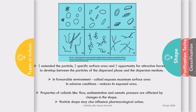The shape of a colloid influences the flow, sedimentation, and osmotic pressure of the colloidal system, and can affect the pharmacological action of formulations. As particles extend, there is an increase in specific surface area, exposing more surface and creating more opportunity for attractive forces between the dispersed phase and the dispersion medium — which can affect stability. In a favorable environment, the colloidal system exposes maximum surface area, like a hedgehog; in adverse conditions, it folds up and reduces exposed surface area.